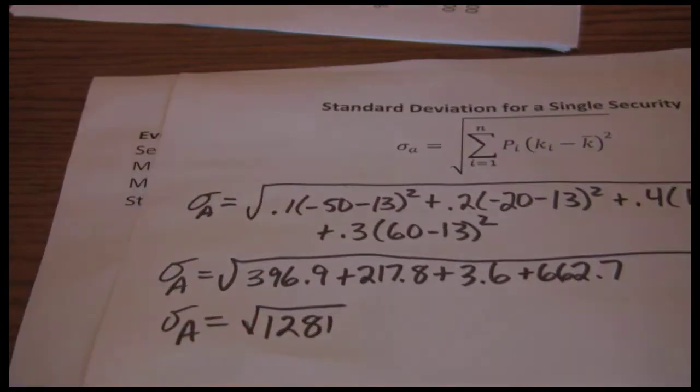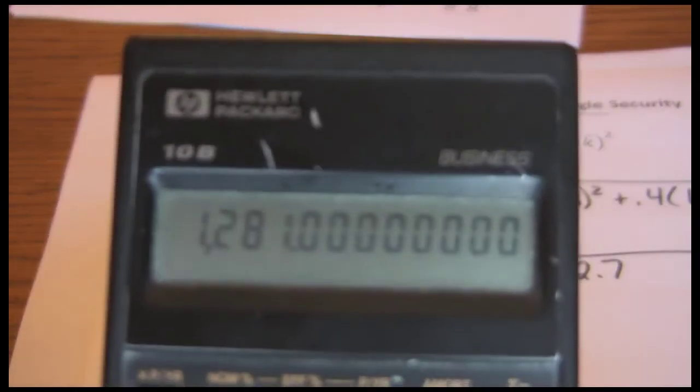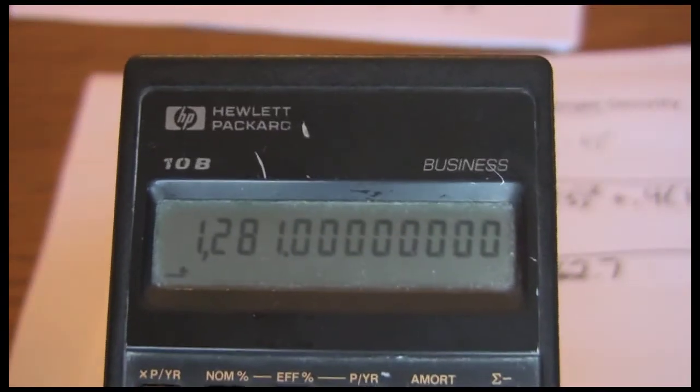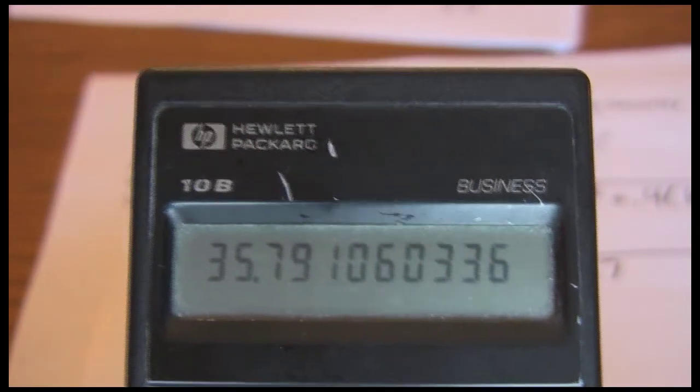And then we just take the square root of that and get a standard deviation of 35.79%.